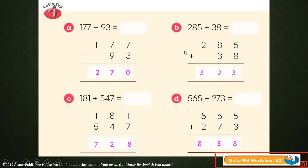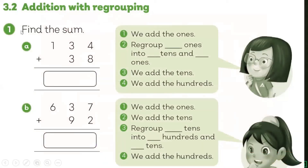If you are ready with addition regrouping, let's go to WB Worksheet 3.2 — Addition with Regrouping. Find the sum. 134 plus 38: 4 plus 8 equals 12, carry 1. 1 plus 3 plus 3 equals 7. And 1 plus 0 equals 1. Answer: 172. Letter B: 637 plus 92. 7 plus 2 equals 9. 3 plus 9 equals 12, carry 1. 1 plus 6 equals 7. Answer: 729.